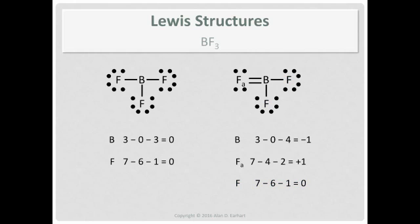So recall what you do when you're comparing formal charges. When you have multiple Lewis structures from which to pick, you pick the one that has more zeros. The Lewis structure on the left has more zeros.